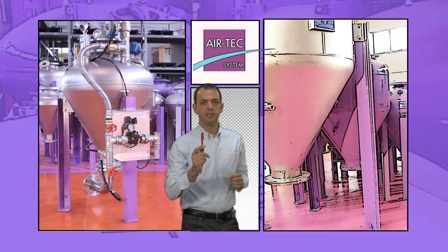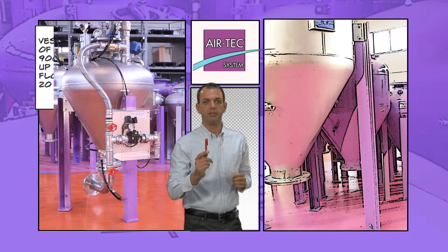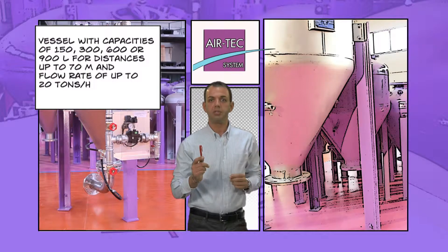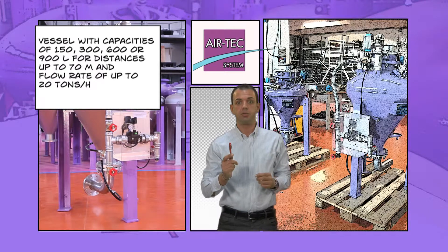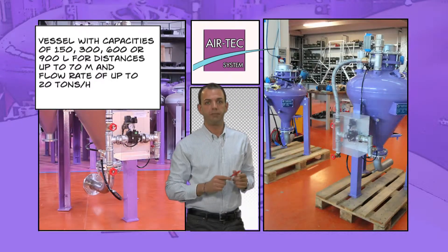For distances of up to 70 meters and capacities of up to 20 tons per hour, a BART 1 vessel with larger capacities of 150, 300, 600 or 900 litres is the best solution.